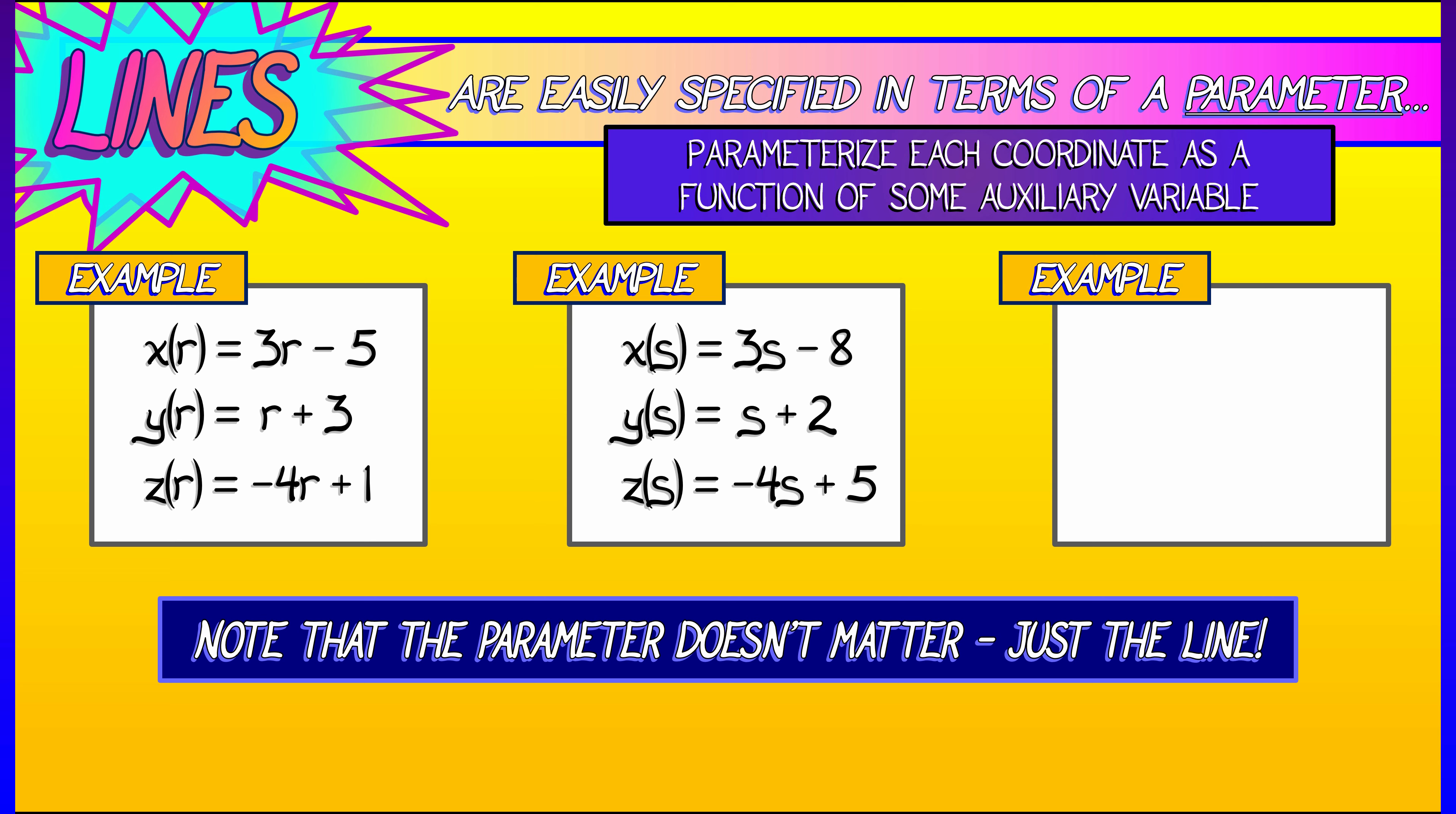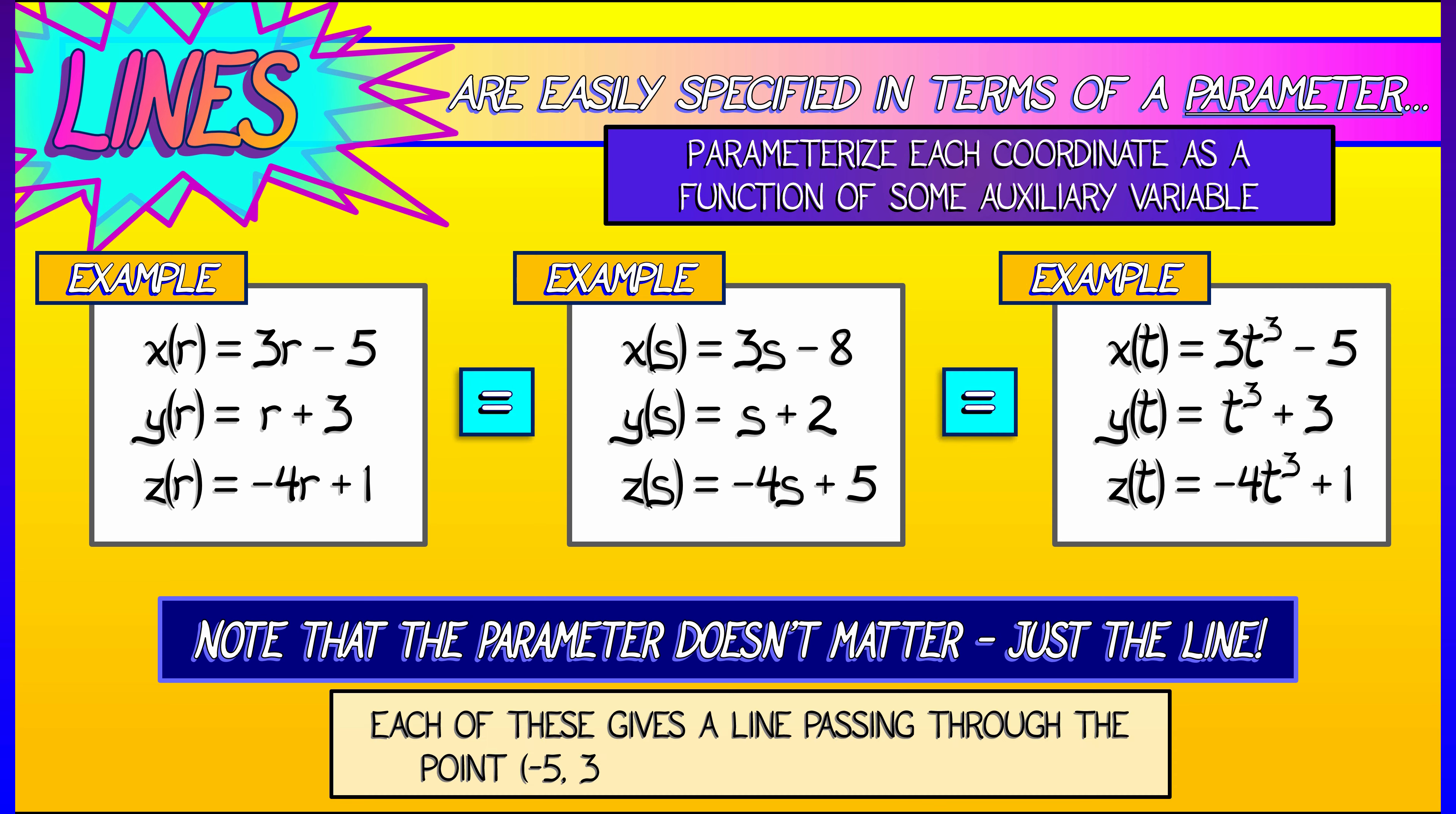But even that is not strictly necessary. Let's say x of t is 3t cubed minus 5, and y of t is t cubed plus 3, and z of t is negative 4t cubed plus 1. Then even though this is not a linear function of the parameter, it's still tracing out a line. And in fact, all three of these parameterizations are tracing out the exact same line. Again, a line passing through a point, negative 5, 3, 1, with the same direction given by these coefficients in front of the parameter terms, 3, 1, negative 4.